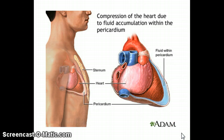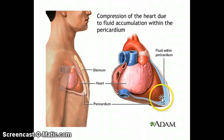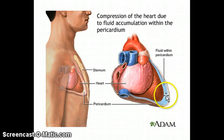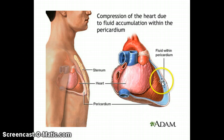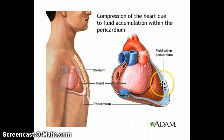Pericardiocentesis is a procedure that removes fluid from the pericardial sac. The heart is enclosed in a double membrane sac — the outer layer is the parietal pericardium and the inner layer is the visceral pericardium or epicardium. Between those two layers is the pericardial space, and sometimes there are different reasons why abnormal amounts of fluid accumulate there, and when that happens the patient needs to have a pericardiocentesis.